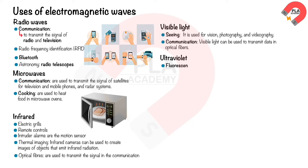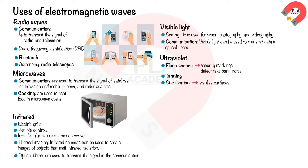Ultraviolet light causes some substances to fluoresce, which is used to create security markings and detect fake banknotes. Ultraviolet light from the sun can cause tanning but also skin cancer. Ultraviolet light can be used to sterilize surfaces and kill bacteria in hospitals, laboratories, and food processing plants.